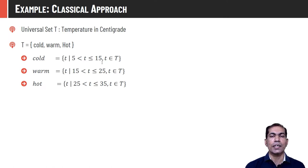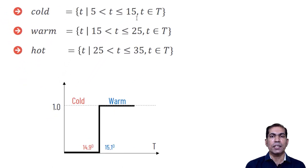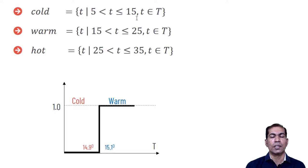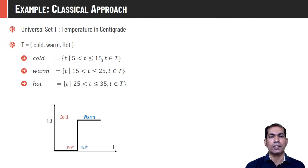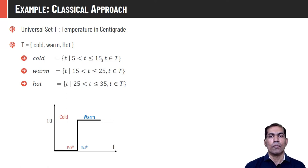The boundary between two crisp sets is very thin, and that's why it is known as crisp. If temperature is less than 15 it is cold; if it is 15.51 it is warm. A mild variation in temperature moves an element from one set to another. Crisp sets are very sensitive to the value of data and cannot handle variation near the boundary — in some cases this property is not desirable.